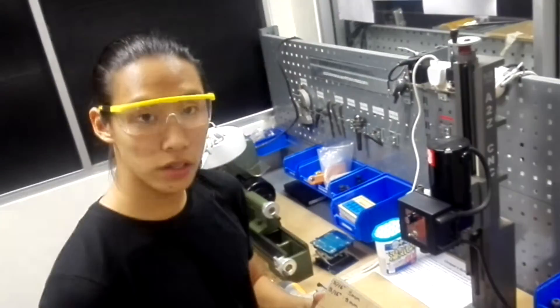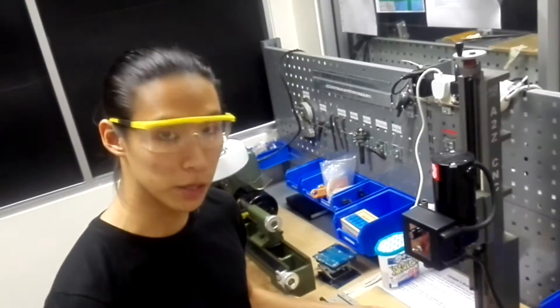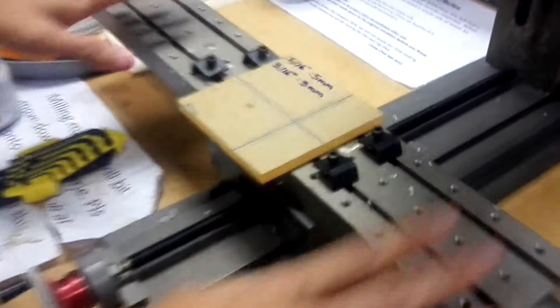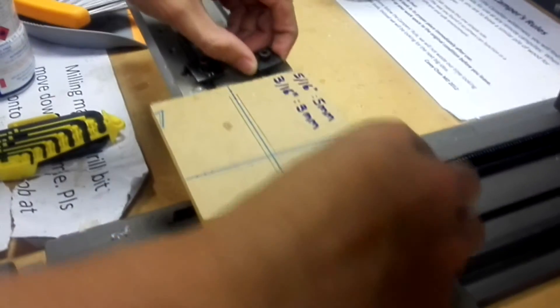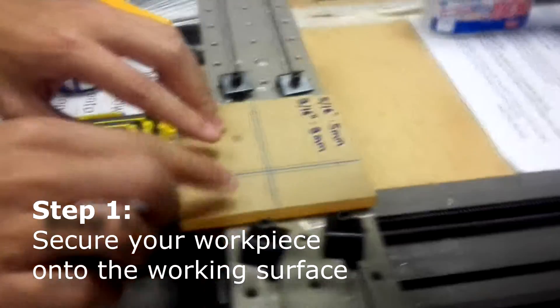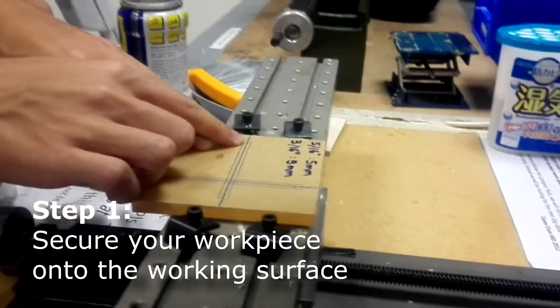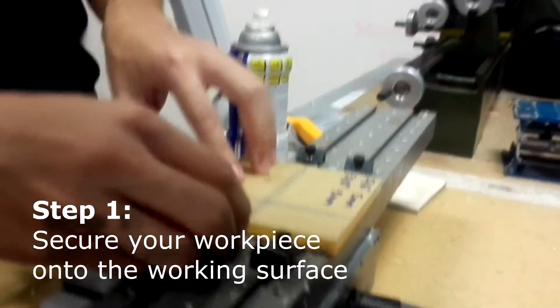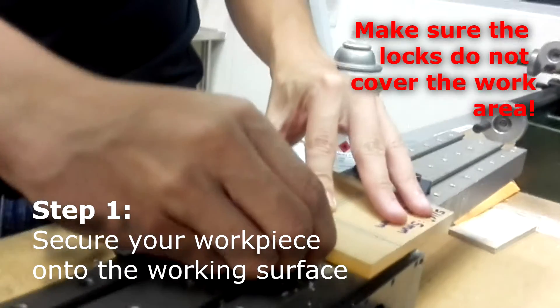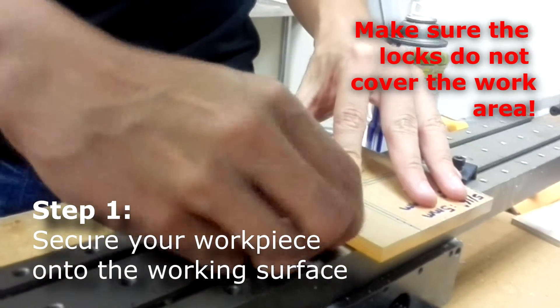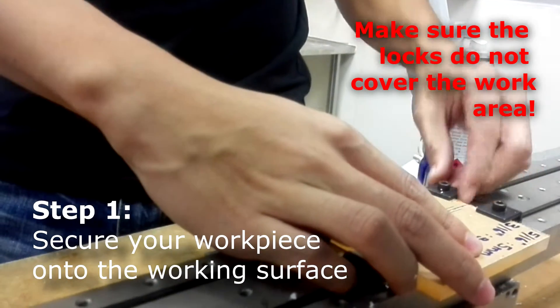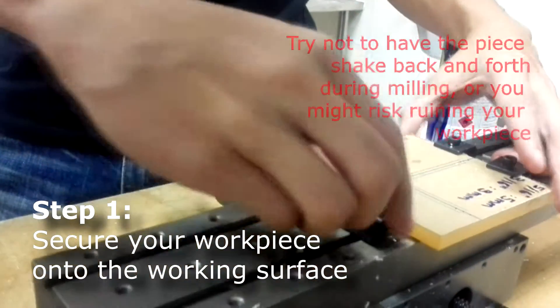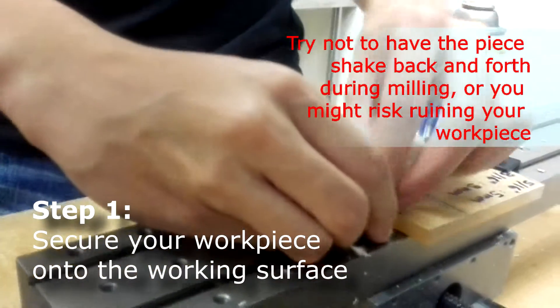We will first secure our workpiece onto the milling machine. Position your workpiece onto the y-axis and ensure that when you position your locks on your workpiece, the portions which are to be milled are not in the way of the locks.